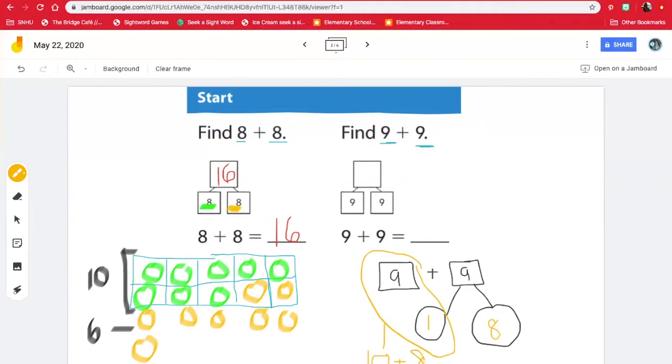So we need to add 10 plus 8. And just like last time with this problem, we could use our fingers to help us. So let's put 10 in our head in our calculator and count on. So we have 10, 11, 12, 13, 14, 15, 16, 17, 18. And we have eight fingers up. So that means 9 plus 9 is 18.